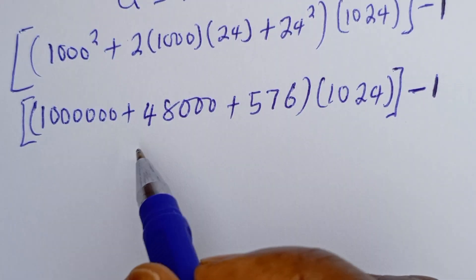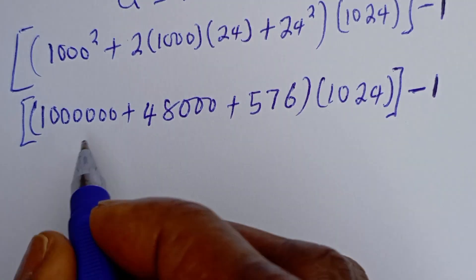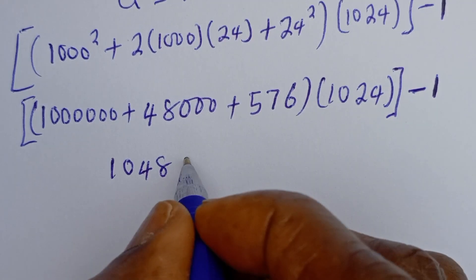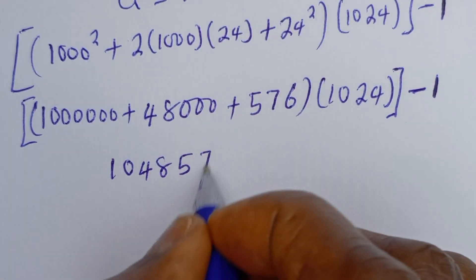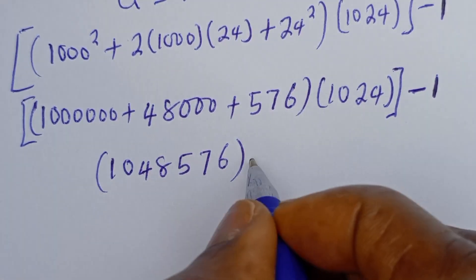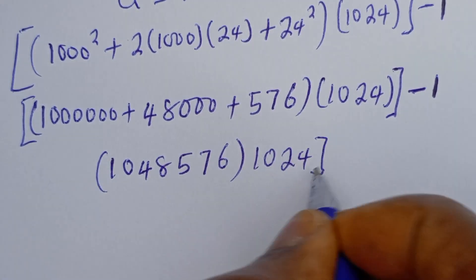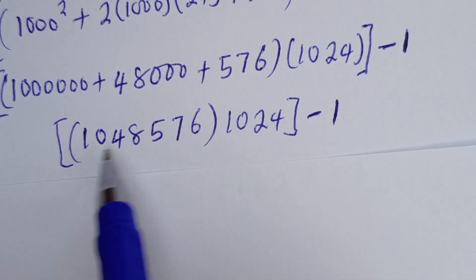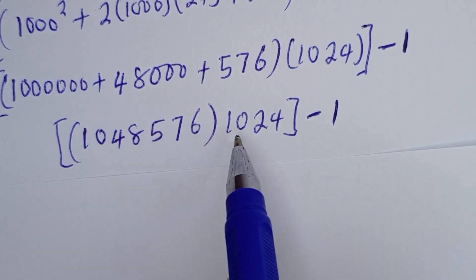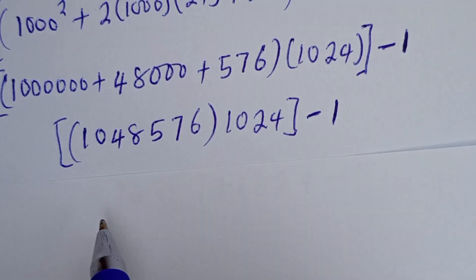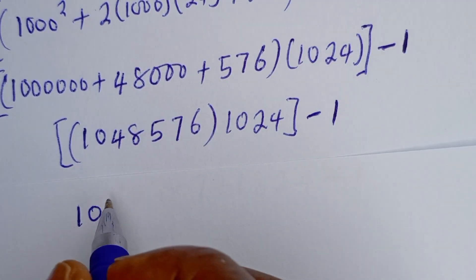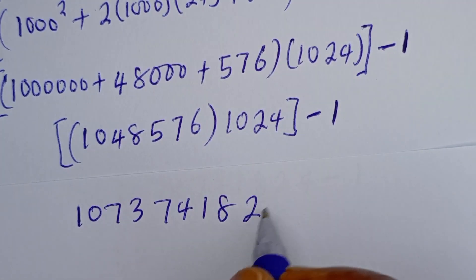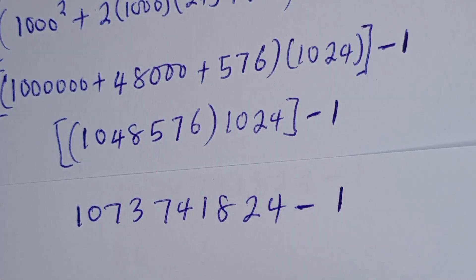If we add those together, this is 1,048,576. Then multiply by 1024, everything minus 1. If you multiply this out, 1,048,576 multiplied by 1024, we have 1,073,741,824, then everything minus 1.